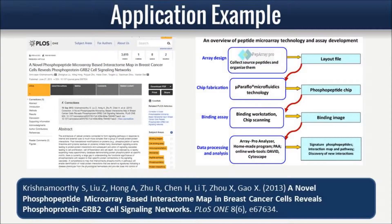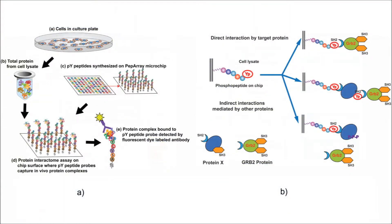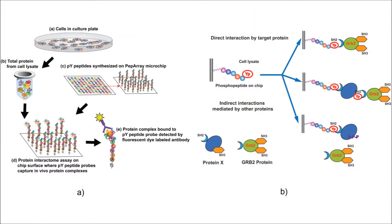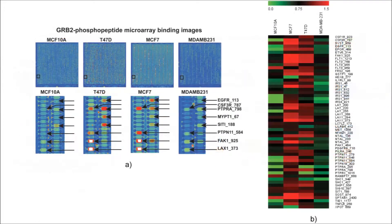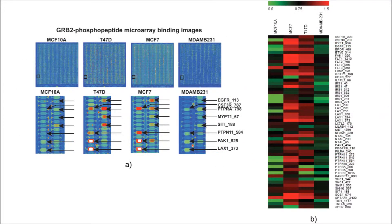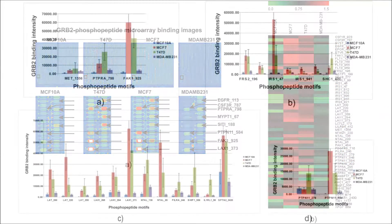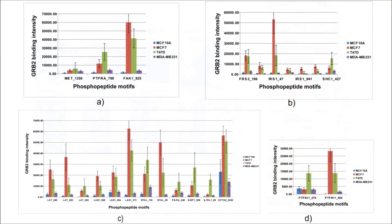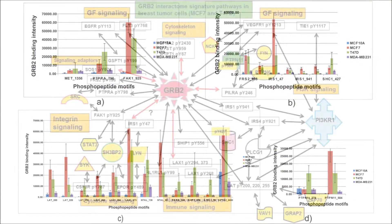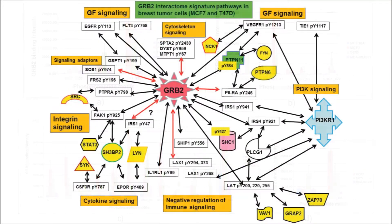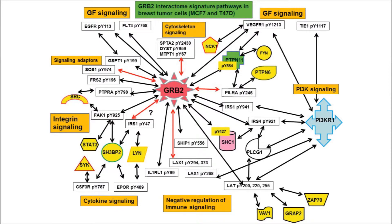Recently, our phosphopeptide microarray was used to identify phosphoproteins that are pivotal in eliciting cellular responses during the process of normal cells becoming cancerous. These phosphoproteins have the potential as biomarkers to detect early cellular responses as a signature of cancer initiation and progression.